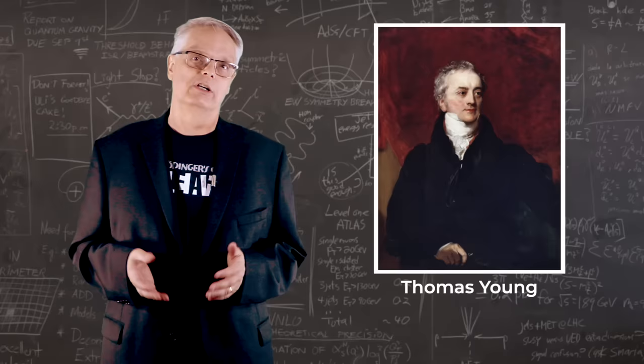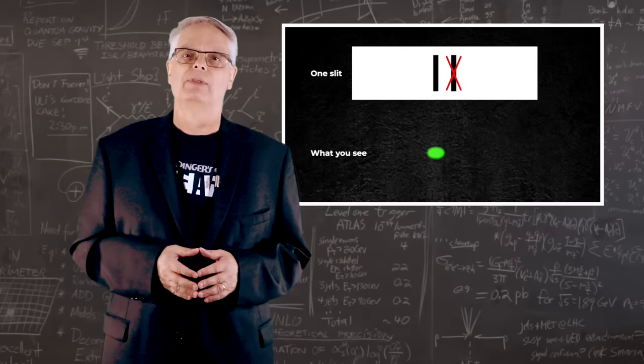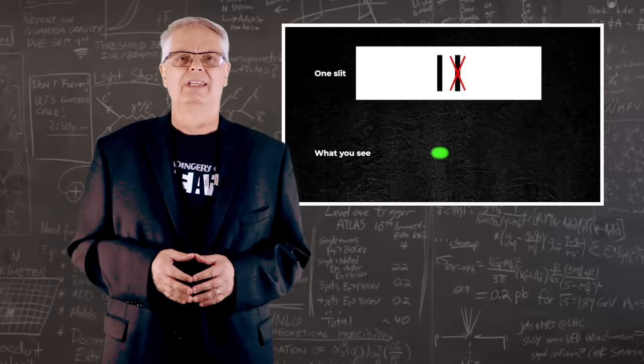So, what happens if there is only one slit, not two? In that case, there is no interference. This stems from the fact that light has only one source. And if you have some physics training, you'll realize that I'm ignoring diffraction here. It just simplifies the discussion, and this whole thing is complicated enough that we need as much simplification as possible.